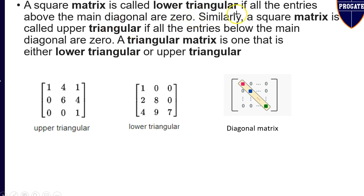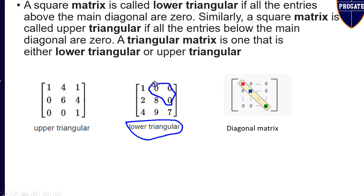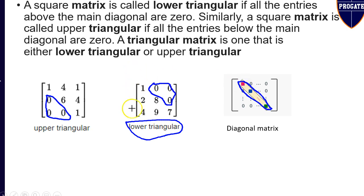A square matrix is called lower triangular if all the entries above the main diagonal are 0. For this 3 by 3 matrix, these are the diagonal elements — it is called lower triangular because all elements above the diagonal are 0. This is the principal diagonal. If all elements below the principal diagonal are 0, it is upper triangular. If all elements both above and below the principal diagonal are 0, with only non-zero diagonal elements, it is called a diagonal matrix.